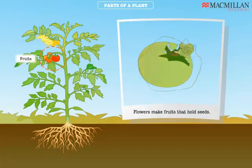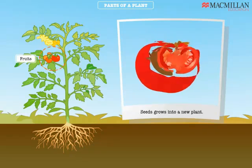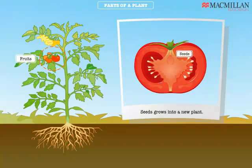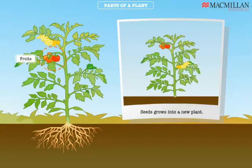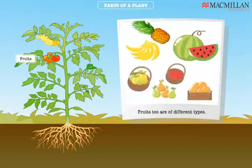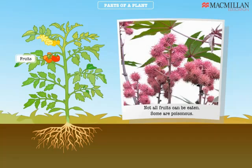Flowers make fruits that hold seeds. Seeds grow into a new plant. Fruits too are of different types. Not all fruits can be eaten — some are poisonous.